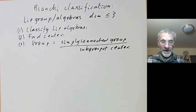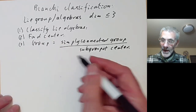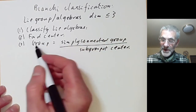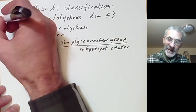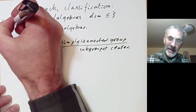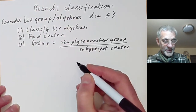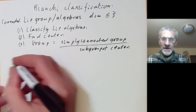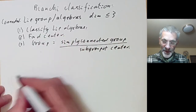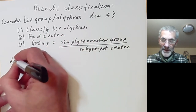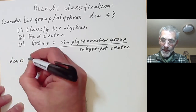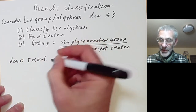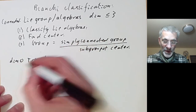The main problem is finding the Lie algebras. We can't do the disconnected ones, so this classification is for connected Lie groups. Let's do the cases of dimension less than three — these are quite easy. Dimension 0 is trivial. There's only one connected group and one Lie algebra.